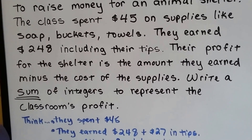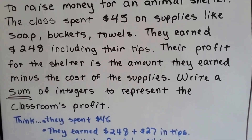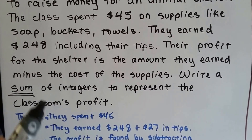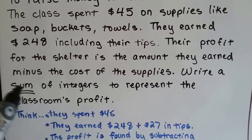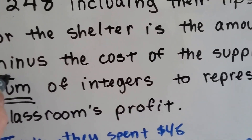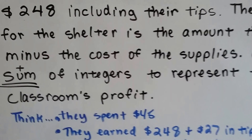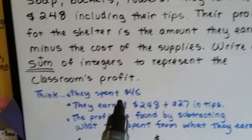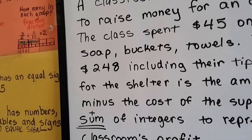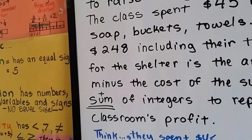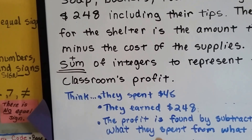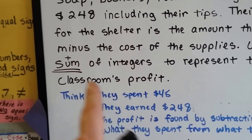They spent the $45 before they earned the $248. The question says to write a sum of integers, meaning there's going to be a plus sign in our equation. We can't just do $248 minus $45 — we need to write a sum of integers and find a way to add these two together.